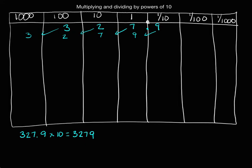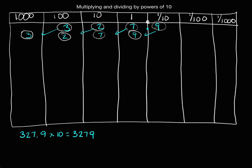I always like to understand a little bit more about my numbers, so let's talk about the value of these different digits. 3 thousands is 10 times greater than 3 hundreds. 200 is 10 times greater than 20. 70 is 10 times greater than 7 ones. 9 ones is 10 times greater than 9 tenths. It's important to understand what's happening with our numbers as we're multiplying by 10.